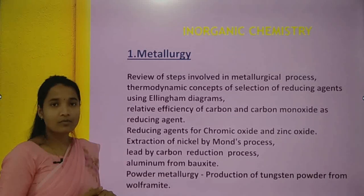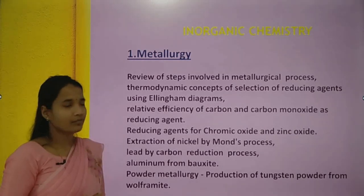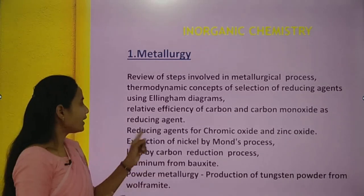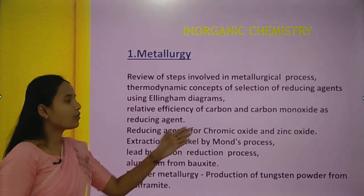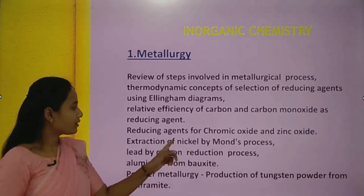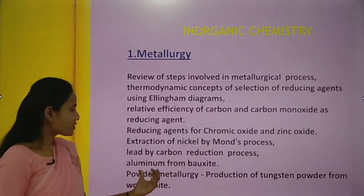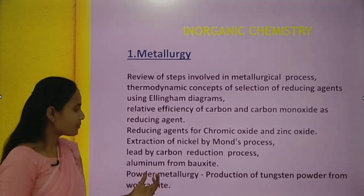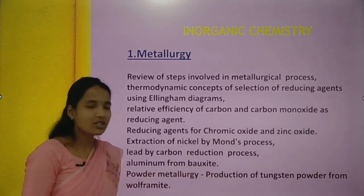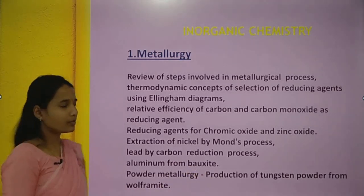To recap metallurgy: thermodynamic concept using the Ellingham diagram, relative efficiency of carbon and carbon monoxide as reducing agents, reducing agent for chromic oxide and zinc oxide, extraction of nickel by the Mond process, extraction of lead by carbon reduction, extraction of aluminium from bauxite, and powder metallurgy — including what is made by powder metallurgy and production of tungsten powder from wolframite.